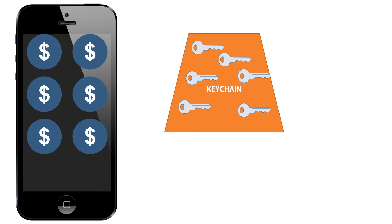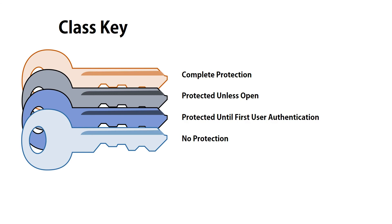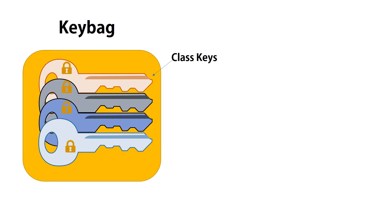The keychain is basically an SQLite database that sits on the phone, and individual entries in the keychain have their own level of encryption. We have four class keys which protect the file keys, and the class keys are encrypted — but where are the class keys stored? The encrypted keys sit in a key bag on the phone.